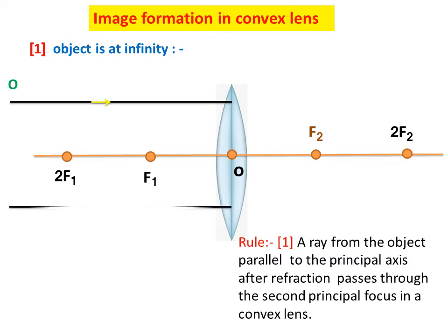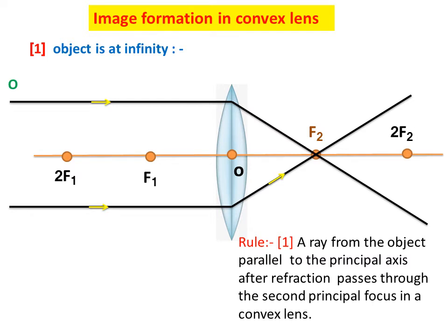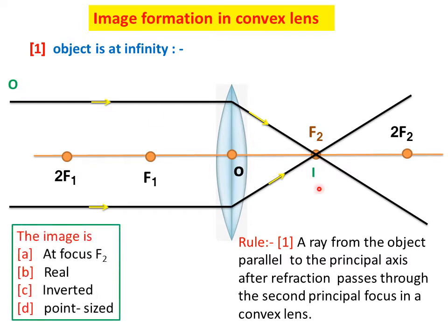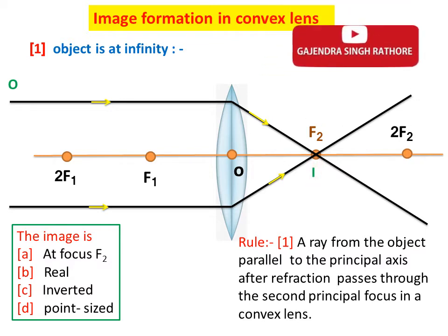We are taking two rays parallel to the principal axis — this is the first and this is the second — and both rays pass through the second principal focus after refraction. We get a point-sized image here at F2. The image I of object O, which is at infinite distance, is at focus F2 — real, inverted, and point-sized.